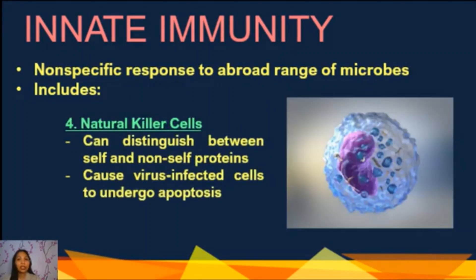Natural killer cells, or NK cells, can distinguish between self and non-self proteins, and can cause virus-infected cells to undergo apoptosis, or cell death. Natural killer cells destroy cancerous or virus-infected cells.